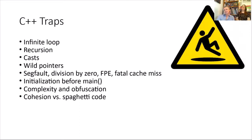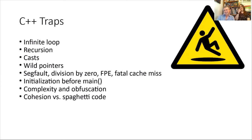C++ traps to avoid: infinite loops, recursion, casts, wild pointers, segmentation faults, division by zero, floating point exceptions, fatal cache misses, initialization before main, and complexity or obfuscation. Cohesion versus spaghetti code is the key concern — keep code clear and well-structured.